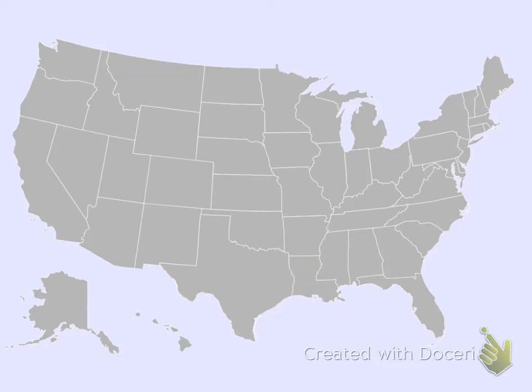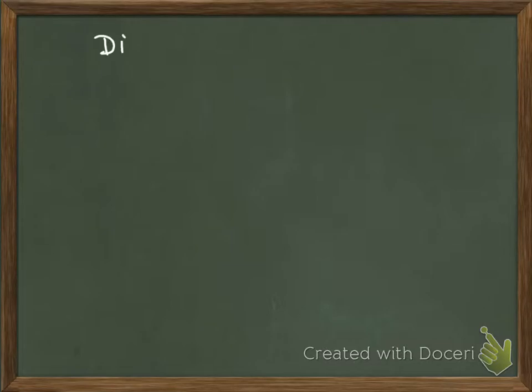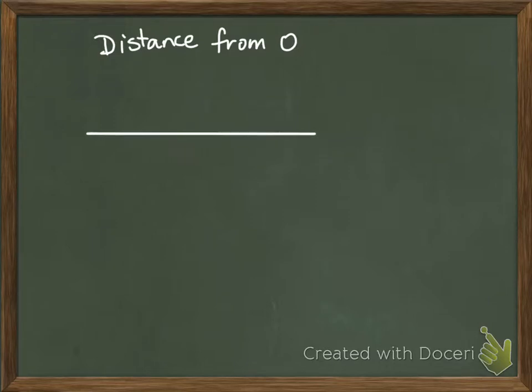Let's look at this in terms of just math. In other videos and other classes, you'll hear that absolute value is a distance from zero. That's easiest to see on a number line. Let's draw our friendly neighborhood number line, centered on zero.